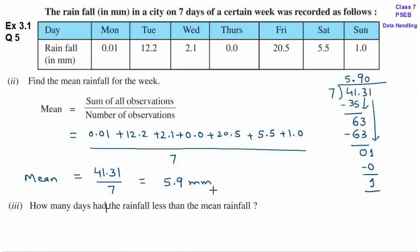Third question है: how many days had the rainfall less than the mean rainfall? कितने दिन हैं जब mean rainfall से rainfall कम हुई है? Mean rainfall कितना है — 5.9 mm. अब हम देखेंगे कितने ऐसे दिन हैं जब rainfall 5.9 mm से कम हुआ है. Monday को कम हुआ, Wednesday को कम हुआ, Thursday को कम हुआ, Saturday को कम हुआ, and Sunday को कम हुआ.